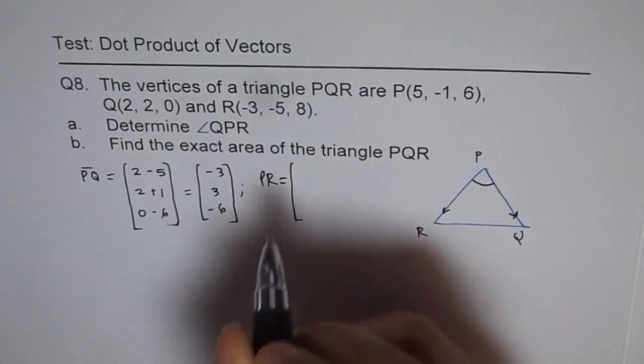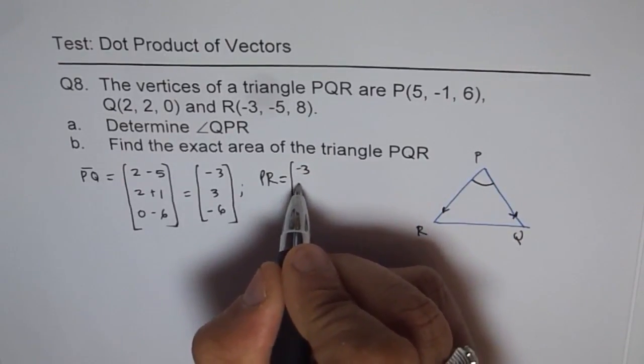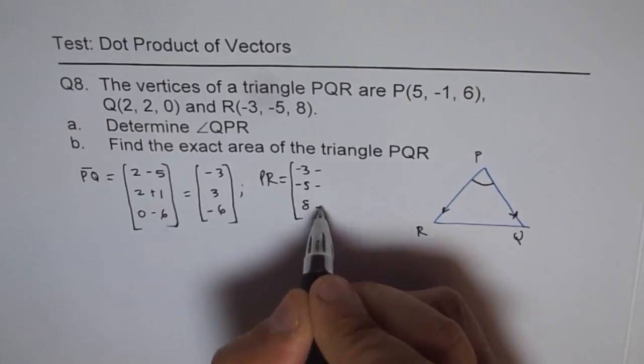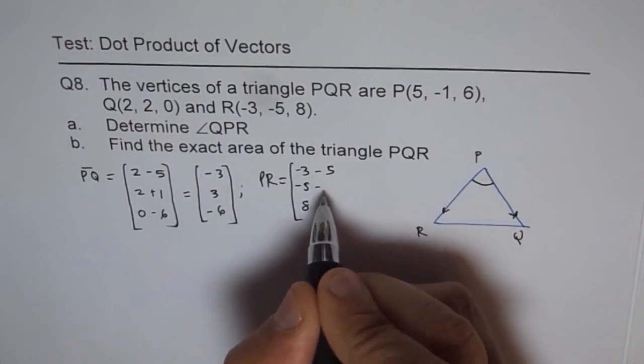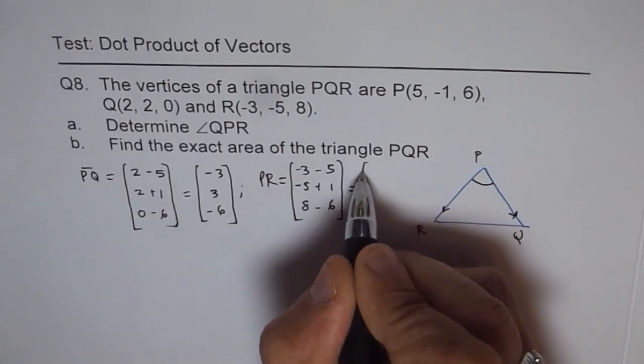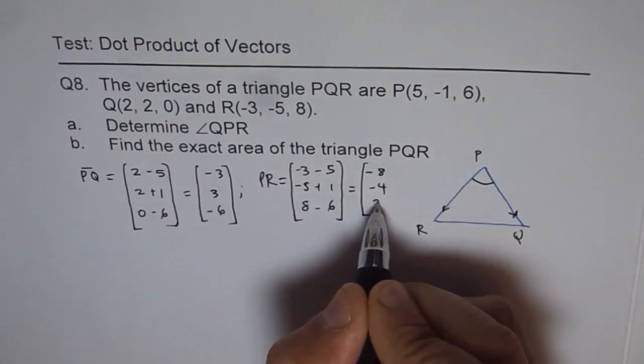And now what is PR? PR equals R which is (-3, -5, 8) minus P which is (5, -1, 6). That gives us (-8, -4, 2). That is PR.